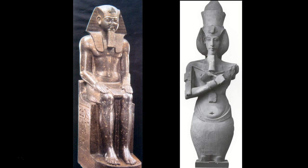Akhenaten is curiously misshapen, with weak arms and a very narrow waist, a protruding belly, wide hips, and fatty thighs — he looks almost like a fertility figure. Some scholars believe the ruler might have suffered from some physical ailment causing his deformity. Others believe it is a deliberate artistic reaction against the established style. It is believed that Akhenaten's artists tried to formulate a new androgynous image of the pharaoh as the manifestation of Aten, the sexless sun disk.